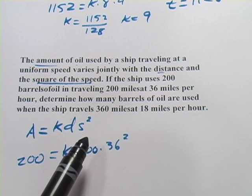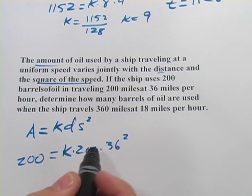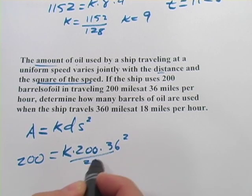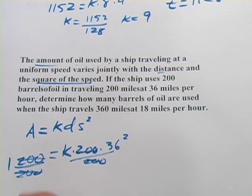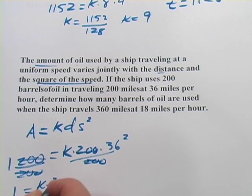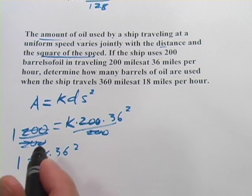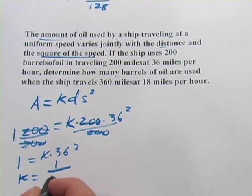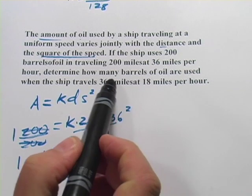Let's see what we've got here. Actually, one thing I noticed before I start multiplying out 36 squared is that I could divide both sides by 200. We would just get 1 over here. So 1 equals k times 36 squared, and then we simply divide by 36 squared. So k equals 1 over 36 squared, which is 1296. So that's our k. It's a fraction this time. That's not a problem.